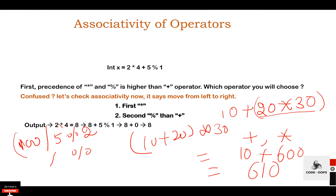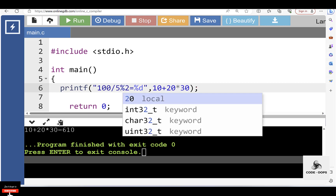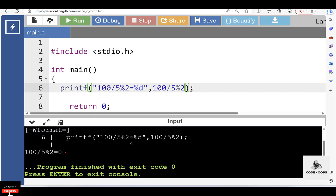So first, 100 / 5 is evaluated, giving result 20. Then 20 % 2 is evaluated — the modulus operator gives us the remainder. The remainder of 20 divided by 2 is 0, so the output is 0. We can verify this using a C program: the expression 100 / 5 % 2 gives output 0. 100 / 5 = 20, and 20 % 2 = 0.